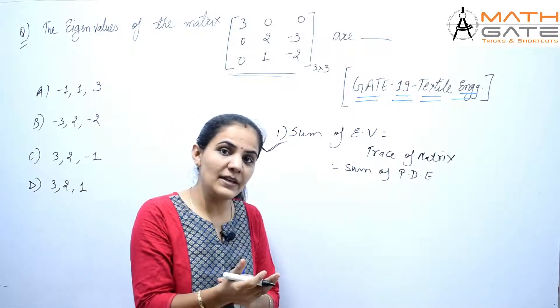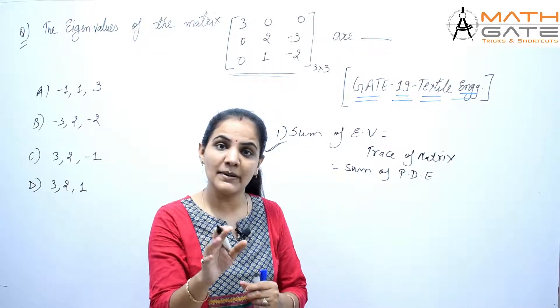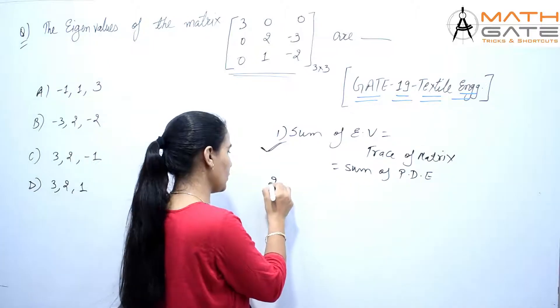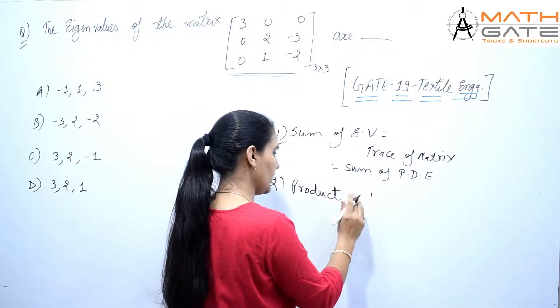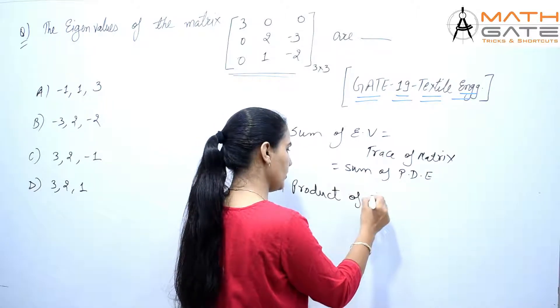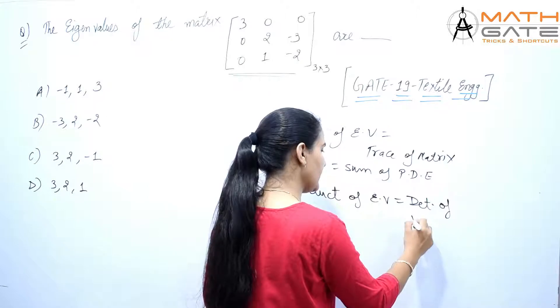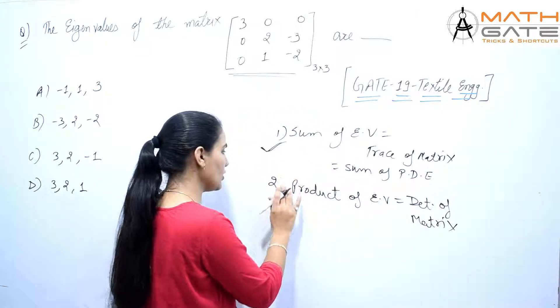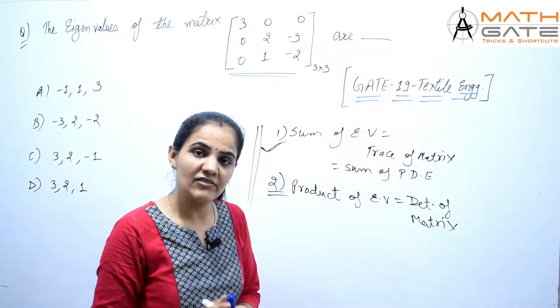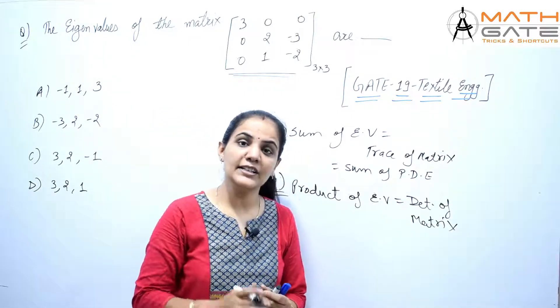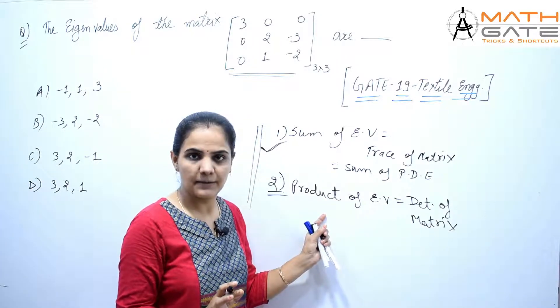If you have done sum and it doesn't work, then we come to the product. Product of eigenvalues is equal to determinant of the matrix. This is the basic and key rule, very important. Most eigenvalues eigenvectors questions, 80 to 90% of eigenvalue eigenvector questions use this rule.